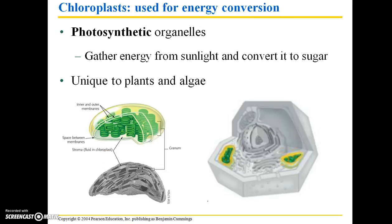Chloroplasts are used for energy conversion and are only found in organelles of photosynthetic organisms. They gather energy from sunlight and convert it to sugar, which is unique to plants and algae. We'll be covering a lot more detail of photosynthesis in a later chapter, including the specific reactions that occur within cells to convert sunlight into food.